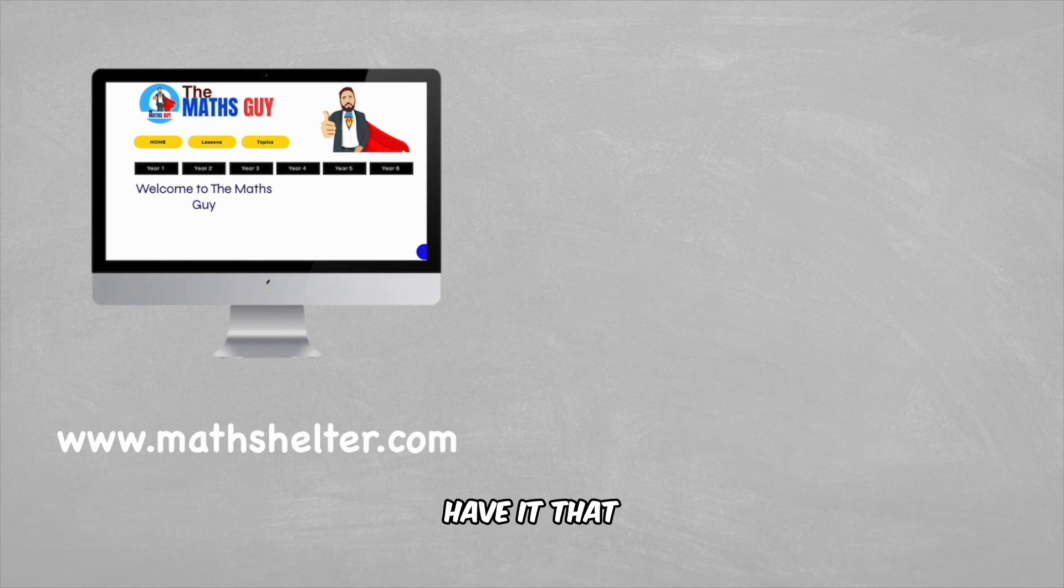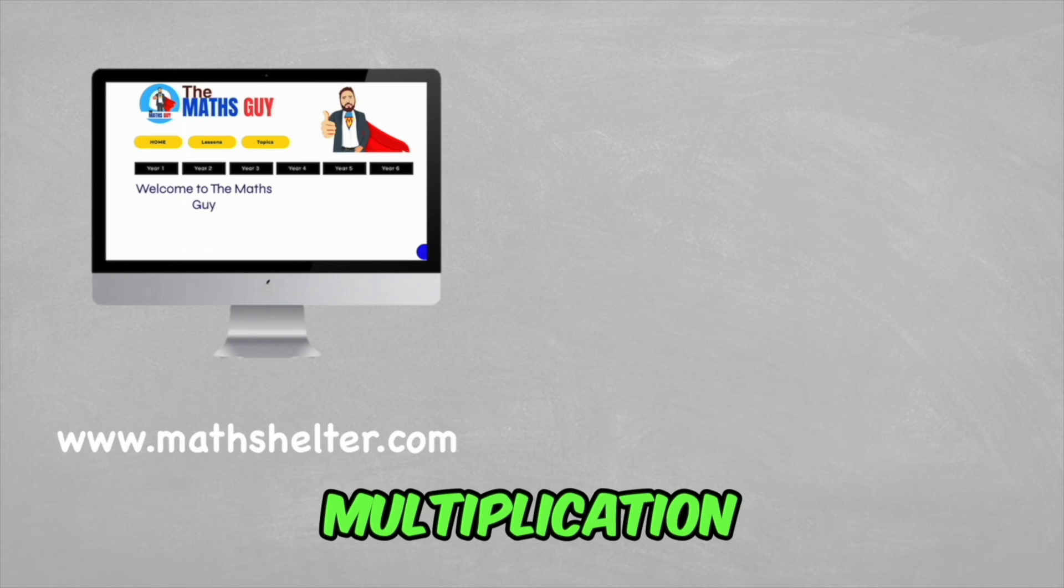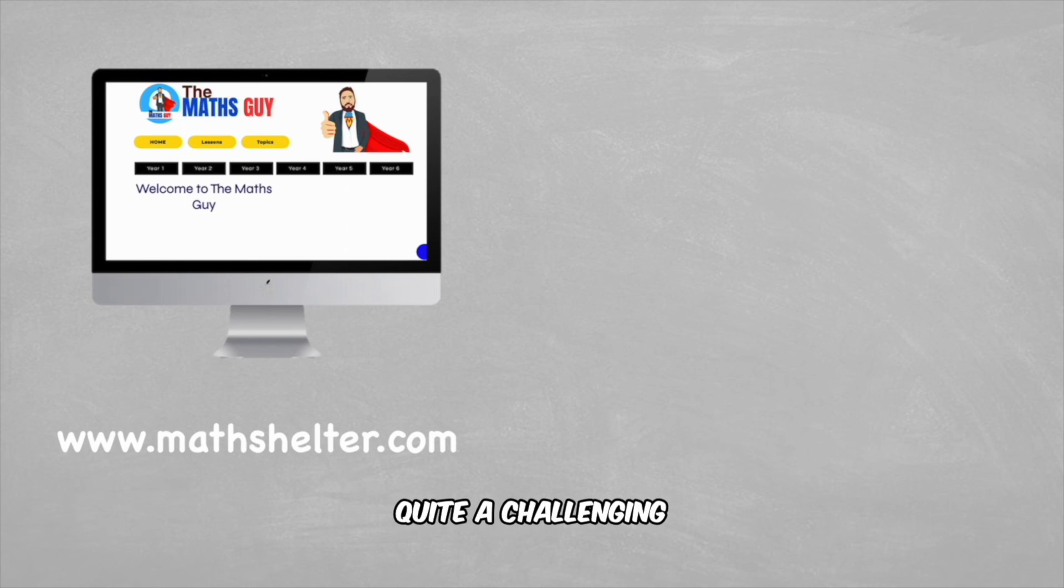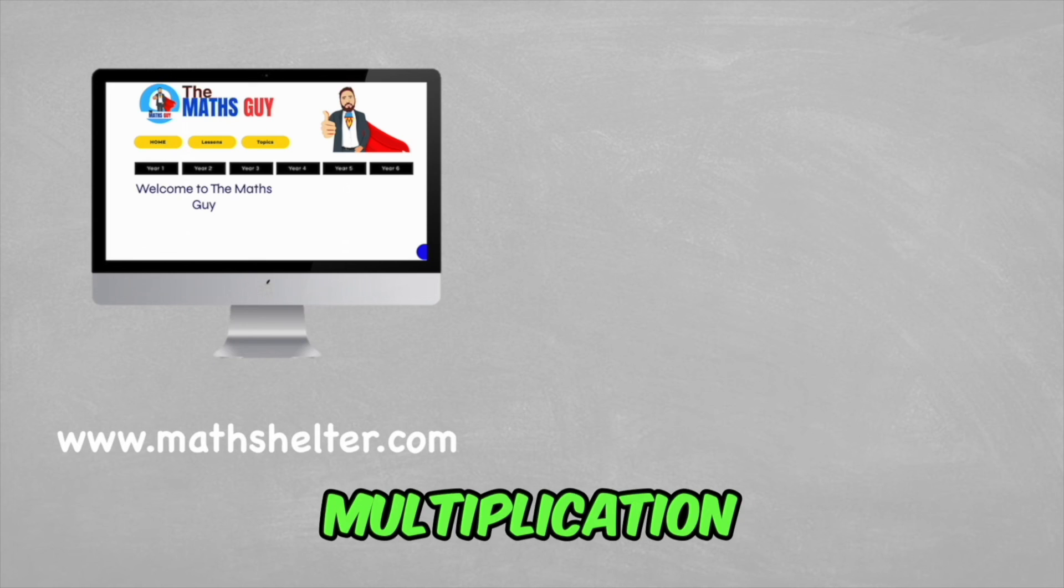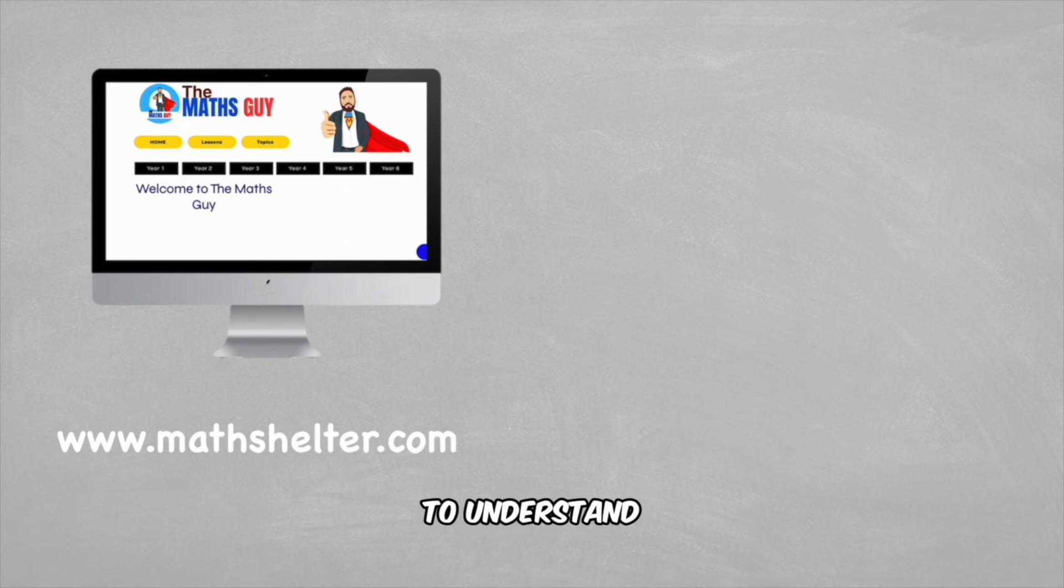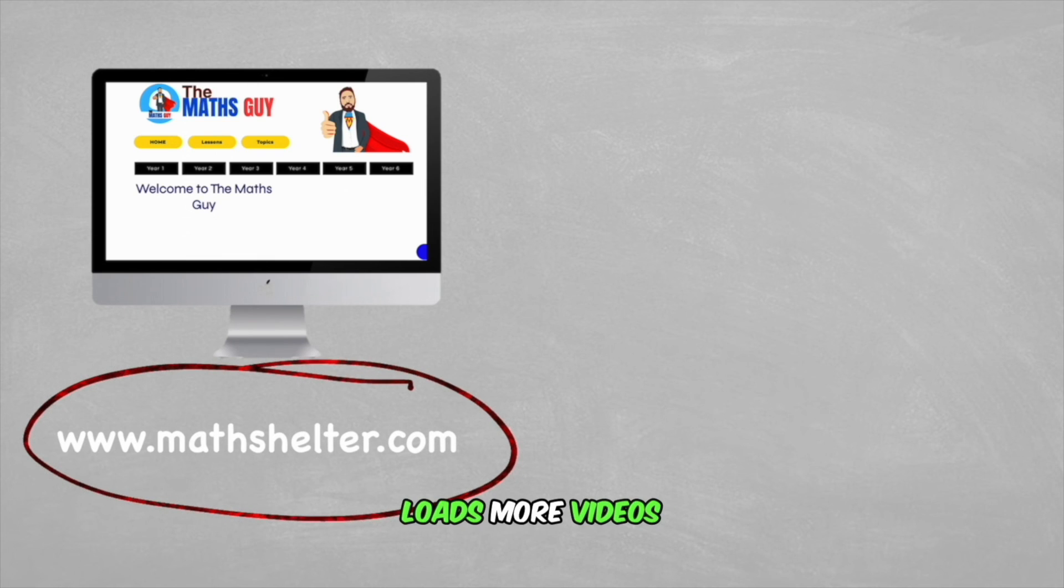And there you have it. That is inverse operations for multiplication and division. Quite a challenging lesson, but very important. If we can understand the number family relationships, it will make understanding multiplication and division links much easier to understand. Hopefully this video has been helpful for you. If it has, subscribe to the channel and head on over to themathshelter.com where you're going to find loads more videos like this covering everything that your year group needs to know about maths. But for now guys, see you in another video. Peace out.